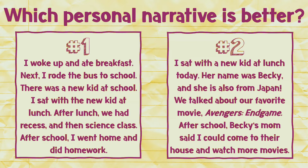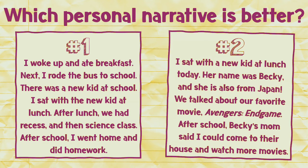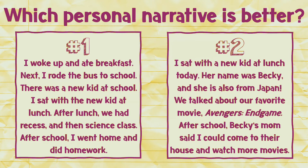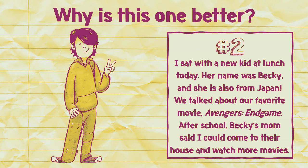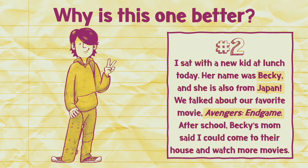So which one do you think is more interesting? One might seem kind of boring, while the other is more interesting because it has better details — and that's number two. Why did number two do better? It gives specific details. For example, number one didn't say the kid's name, but number two says her name is Becky and tells us where Becky is from and what they did together.